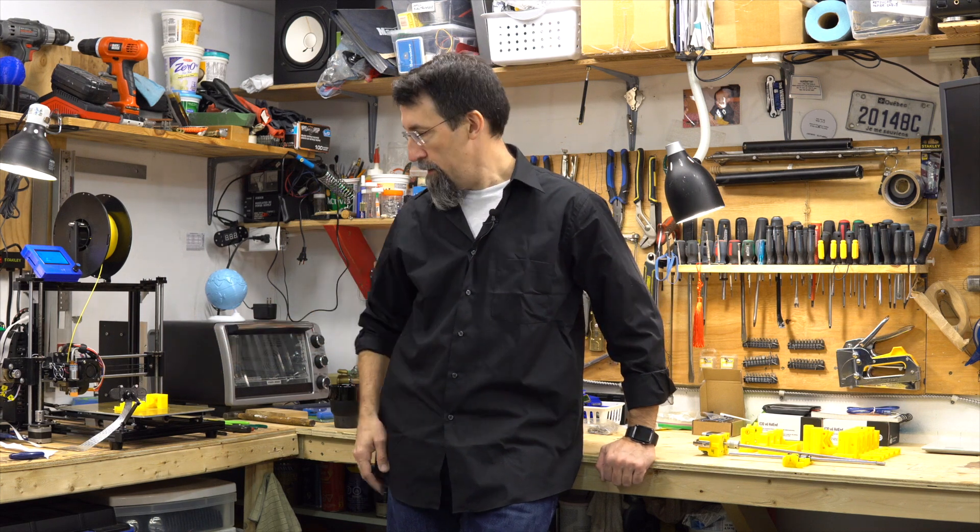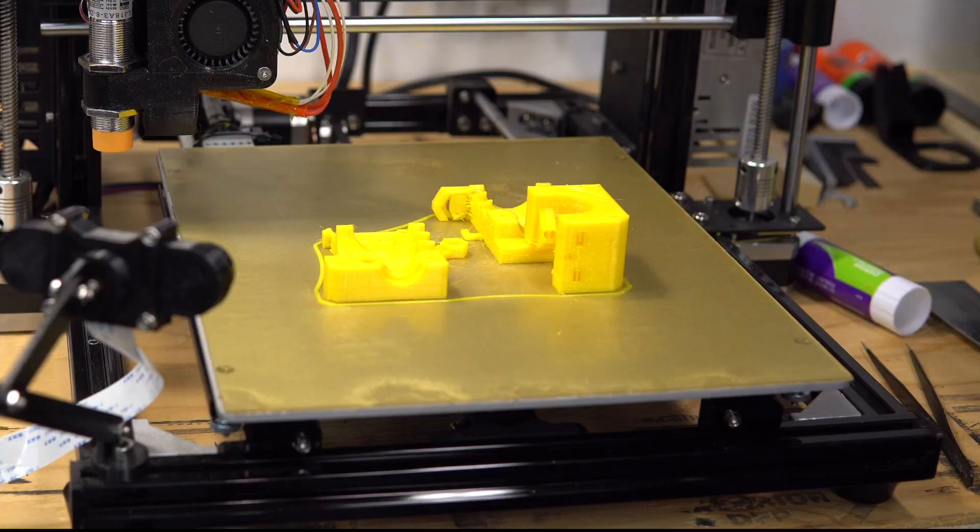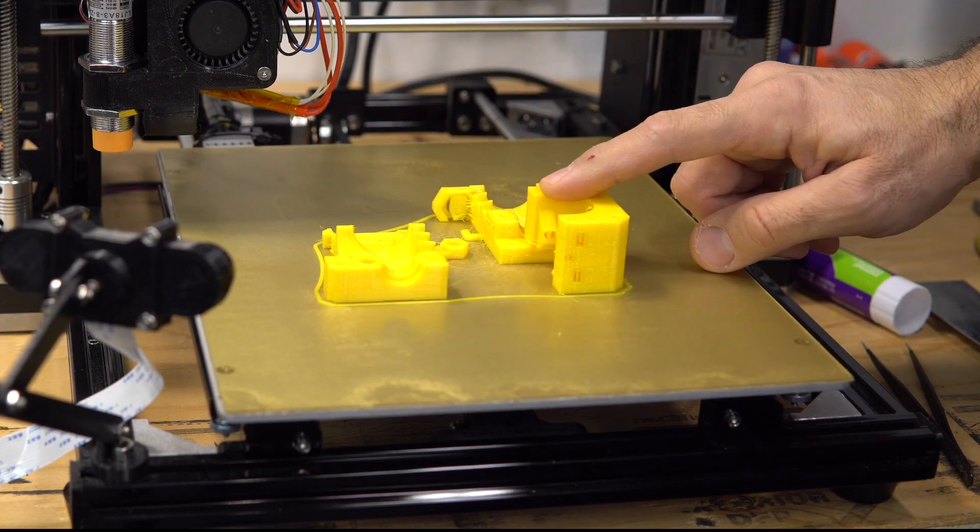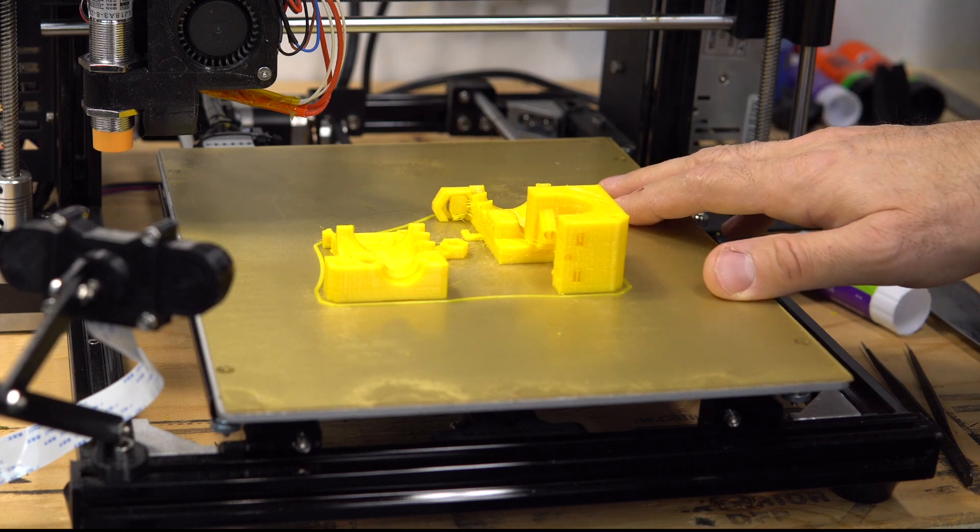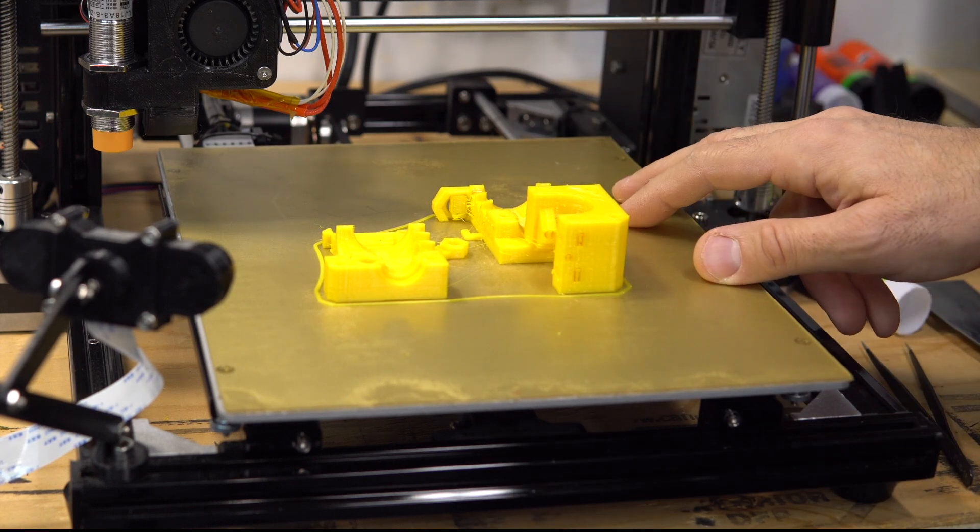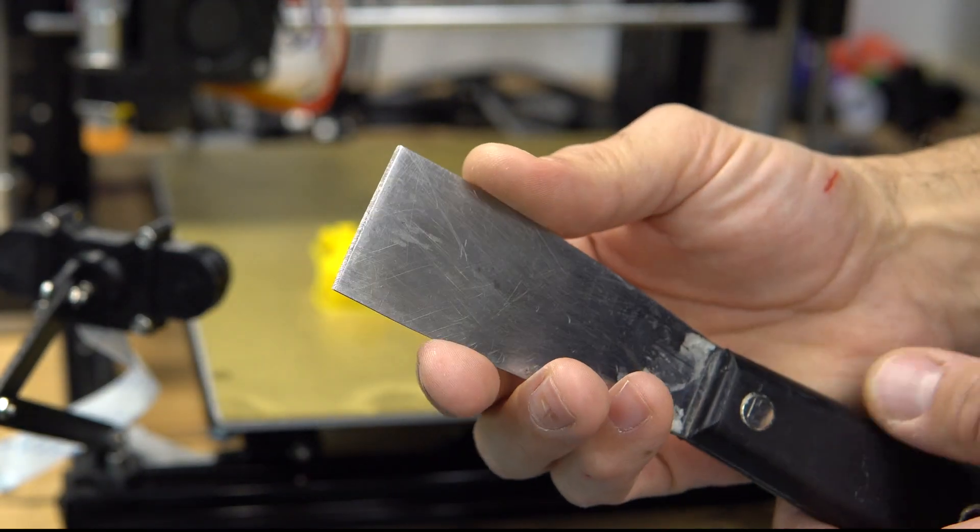So come up close. You can see those parts are sticking really well to the bed, and I don't have a Prusa, so I cannot bend the bed or detach them. So what I use is this putty knife.